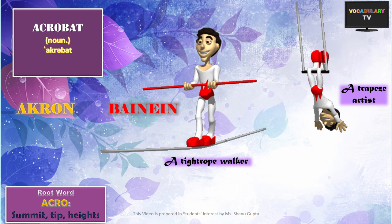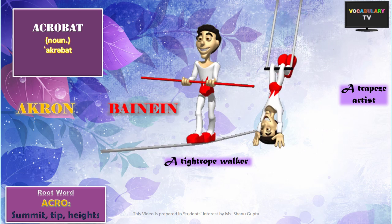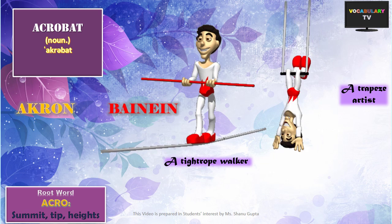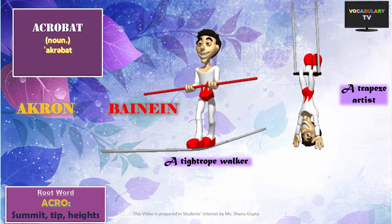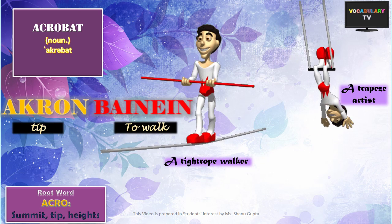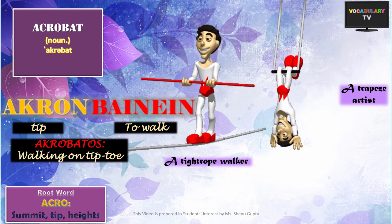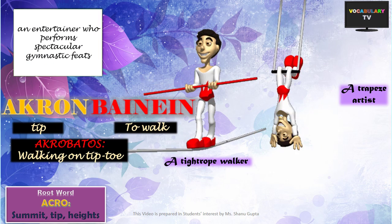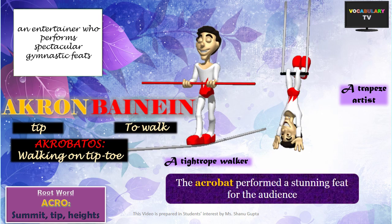Our initial four words contain the Greek root ACRON, which means tip or summit — the highest point of a hill or mountain. Acrobat is one of the most common words based on this root. Made up of ACRON meaning tip and BAIN meaning to walk, the word acrobat literally referred to someone who walks on tiptoe, such as a tightrope walker. Nowadays, acrobat popularly stands for any entertainer who performs spectacular gymnastic feats.